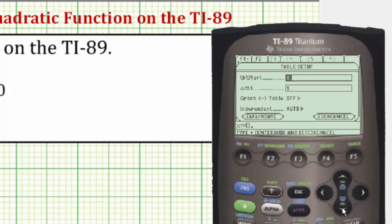If we change the automatic to ask by highlighting auto, pressing right, and then highlighting ask and pressing enter twice, this would allow us to enter any x value that we wish, and the corresponding y value will be automatically calculated. Let's leave it on automatic, so let's press escape twice.